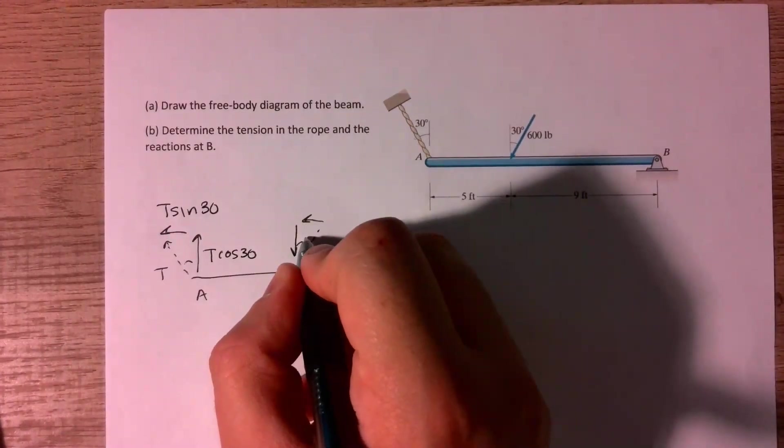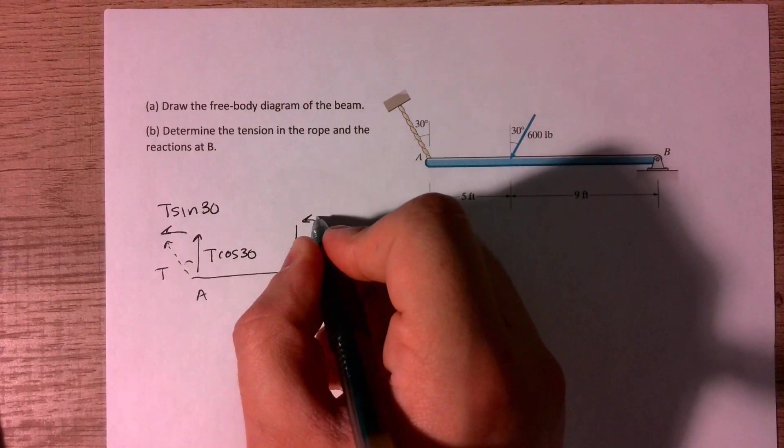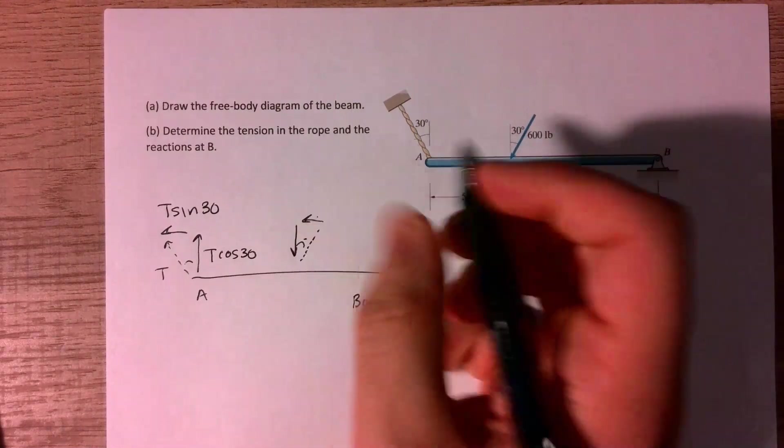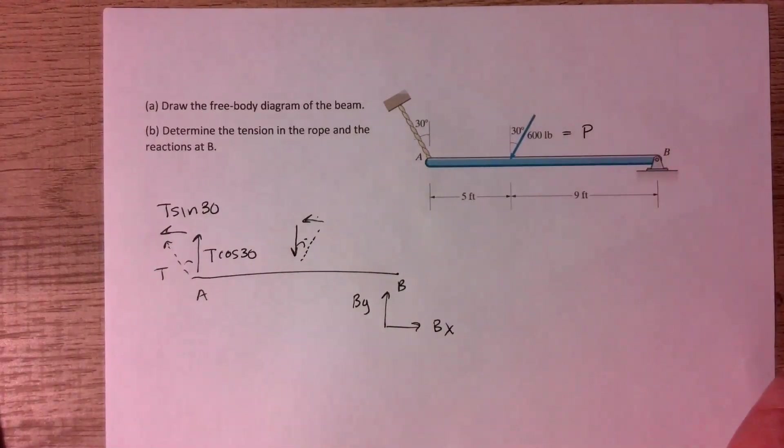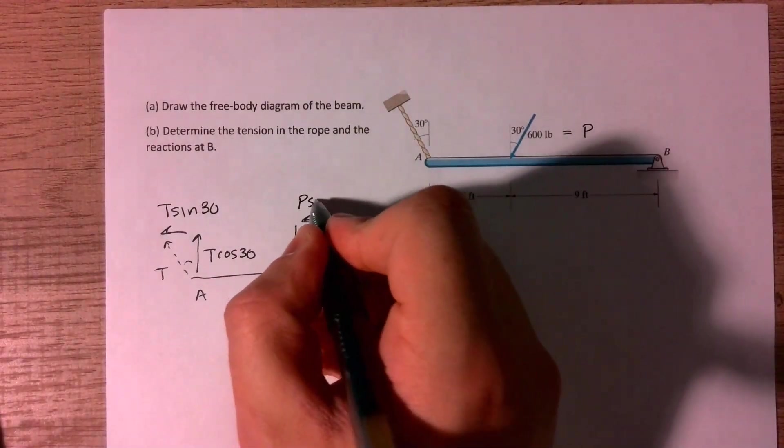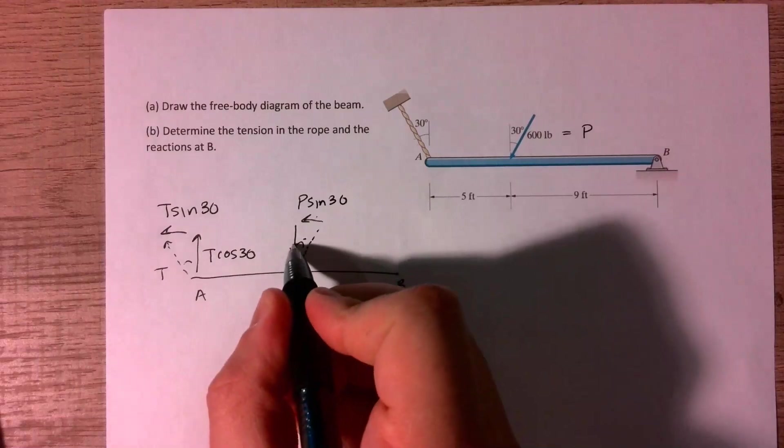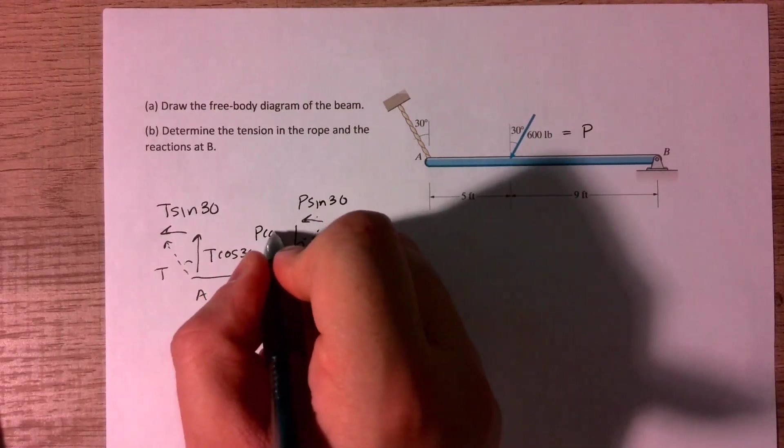I can do the same thing here. This is also an angle of 30 degrees. So the component directly across from it will be the sine. And so I'll call this P just to make it easier to write. And so if P is equal to 600 pounds, so this will be P sine 30. And then this one becomes P cosine 30.